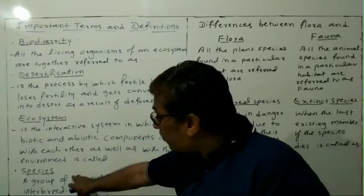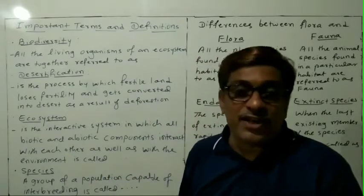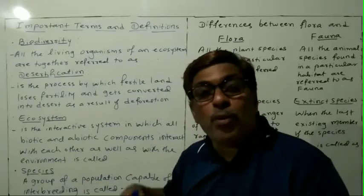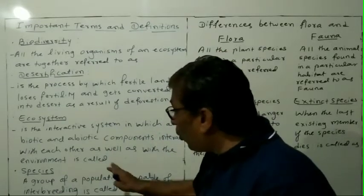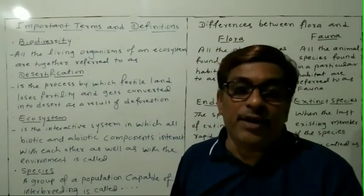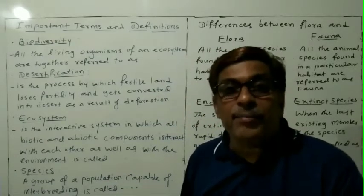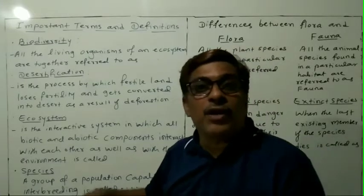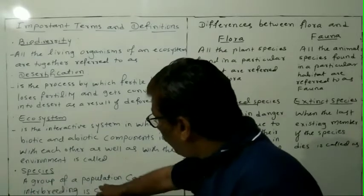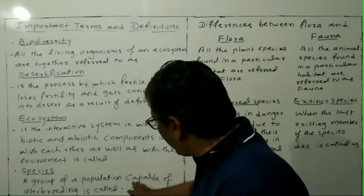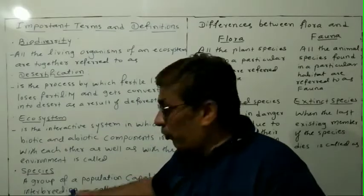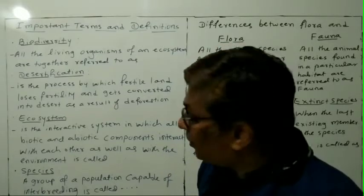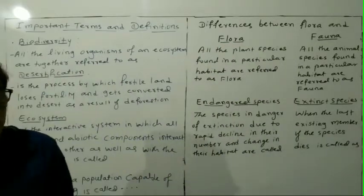Next, what do you mean by species? S-P-E-C-I-E-S — species. A group of population capable of inter-breeding — inter-breeding means to reproduce — in a particular community, is called a species.